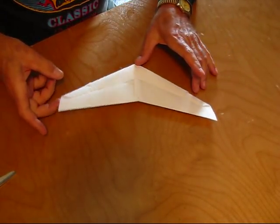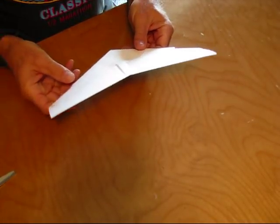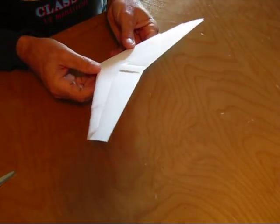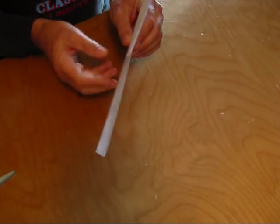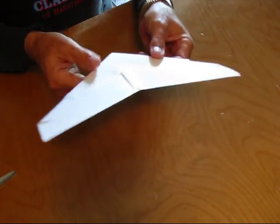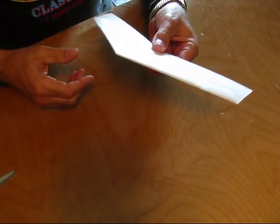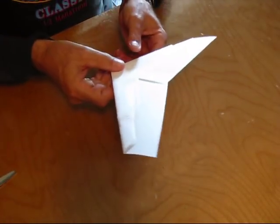This is an omni wing made of an eight and a half by eleven sheet of paper and some scotch tape. You get a high performance flying wing in just a few minutes. Let's go ahead and build one.